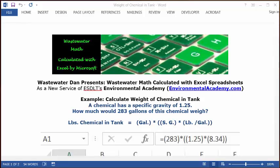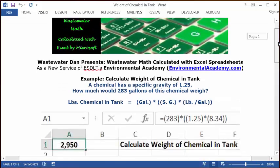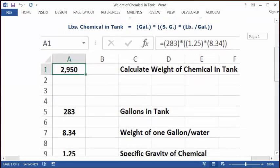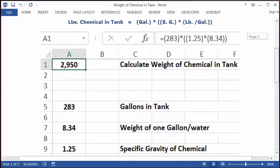We're going to set up an equation that says pounds of chemical in the tank equals the gallons times the specific gravity times the standard weight that one gallon of water, which is the basis for specific gravity calculations. Let's see how we're going to put this in our blank Excel spreadsheet.